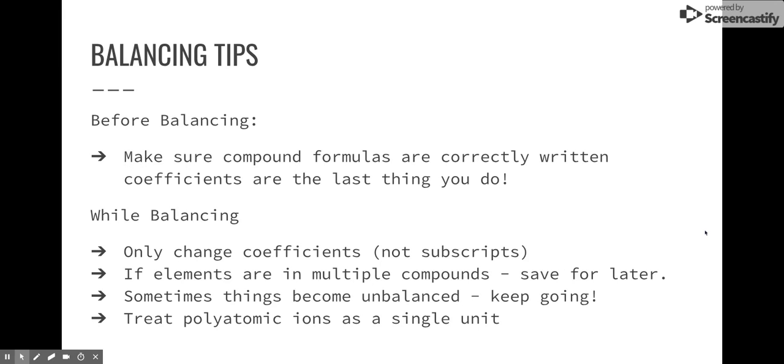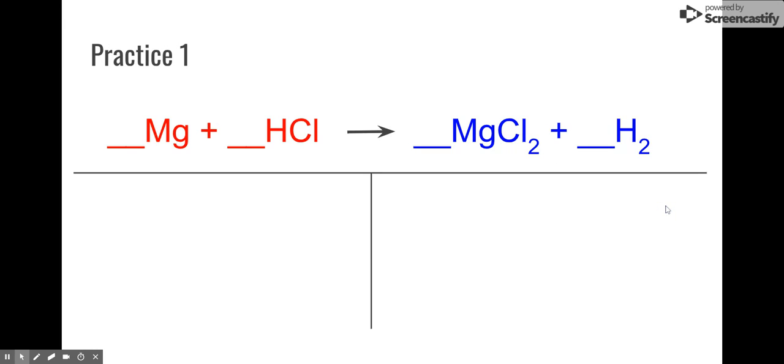Finally, if you see polyatomic ions, treat them as a single unit, and I'll mention these as we go. So here's our first practice. We have magnesium and hydrochloric acid makes magnesium chloride and hydrogen gas.